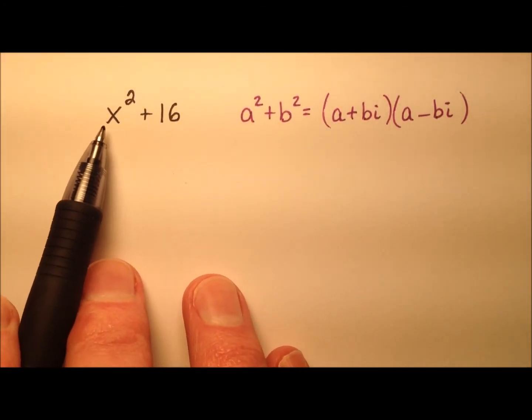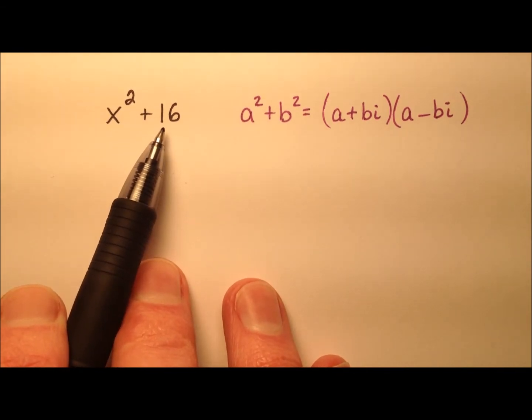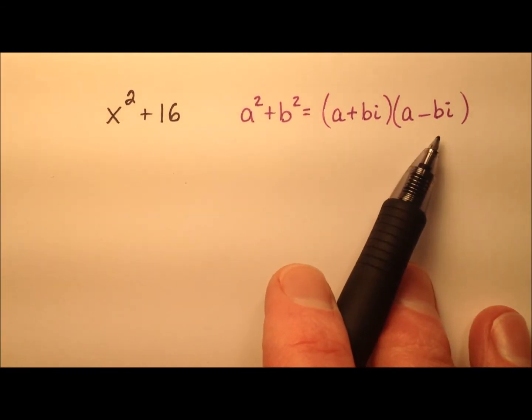In this example, we're going to factor the binomial expression x squared plus 16 using our sum of squares factorization.